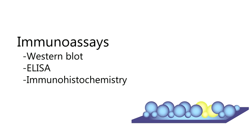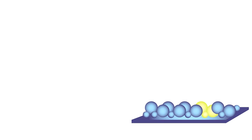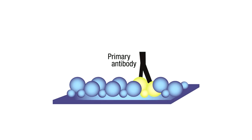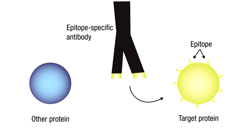For immunoassays such as Western blot, ELISA, and immunohistochemistry, the target protein or antigen is identified using a primary antibody that binds to the specific epitope on the target protein.